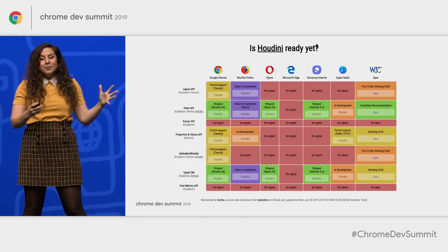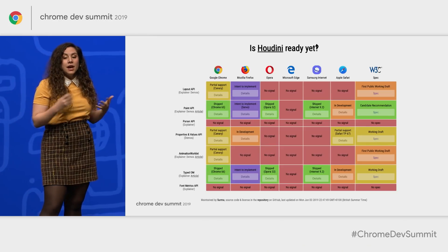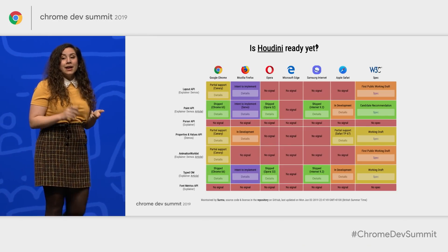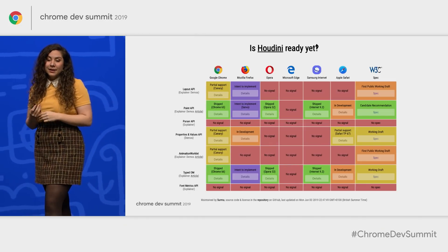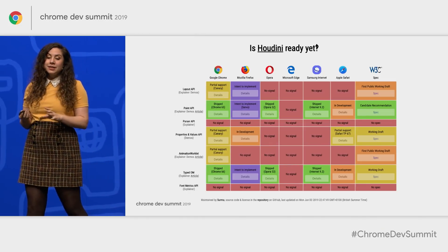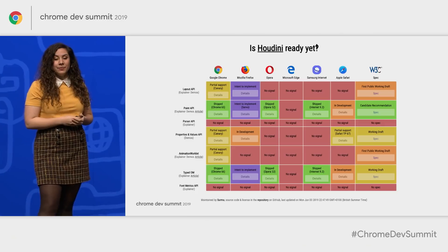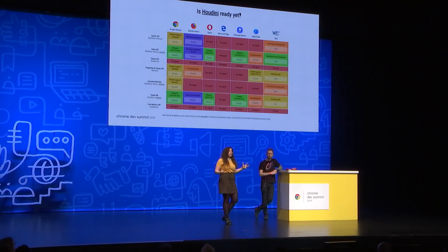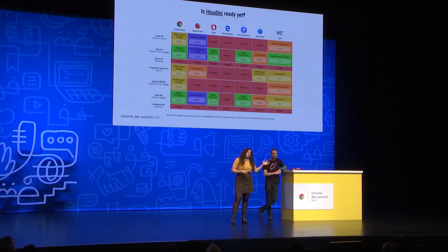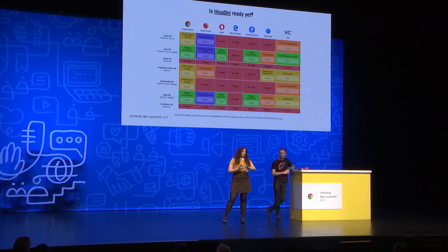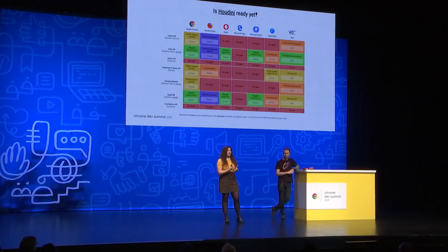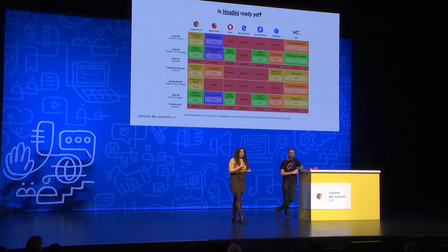Houdini is really an umbrella term that covers a few different APIs: the Layout API, the Paint API, the Parser API, the Properties and Values API, the Animation Worklet, the Typed Object Model, and the Font Metrics API. If you want more info, 'Is Houdini Ready Yet' is a great resource created by Surma that shows you all of these specs and their current status. Today we'll be covering the Paint API, Properties and Values API, the Typed Object Model, and animation, because they are the most supported now.